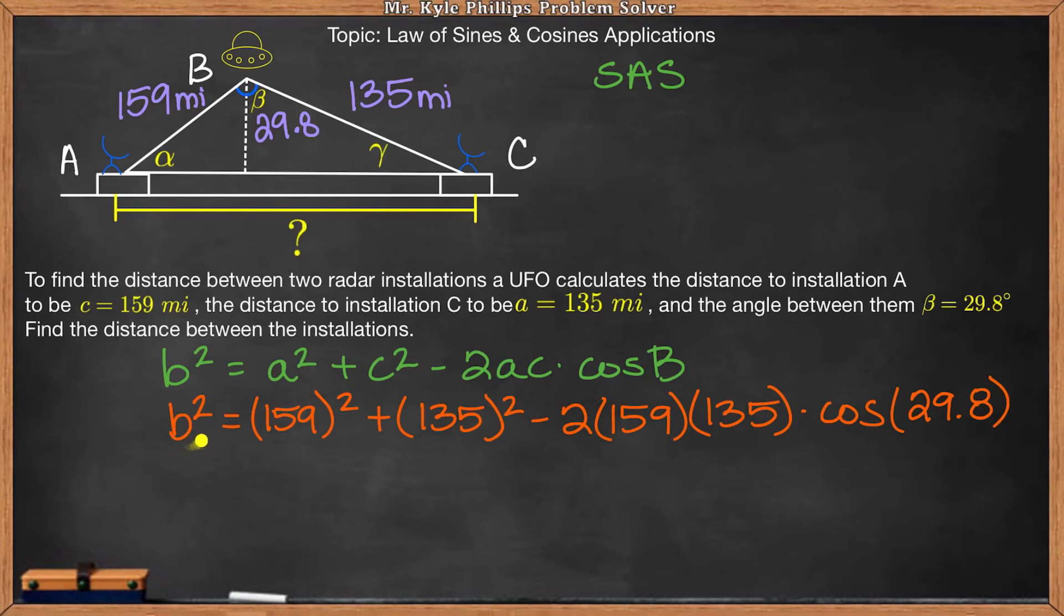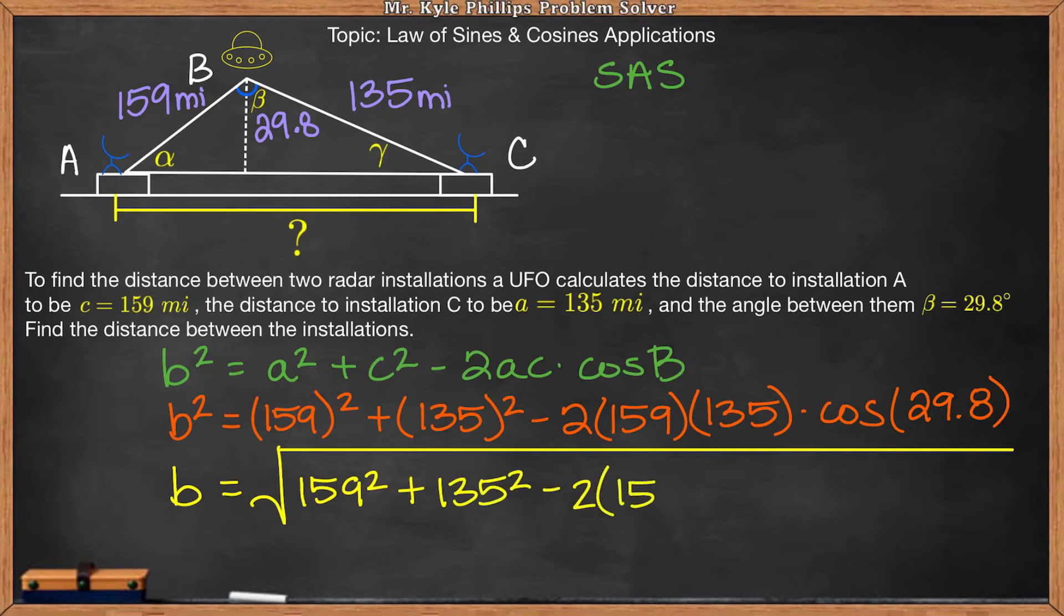Here, we don't want the leg of B squared. We want the value of just leg B. So to get B by itself here, we are going to take the square root. So B is going to be the square root of all of this. So it's the square root of 159 squared plus 135 squared minus 2 times 159 times 135 times the cosine of 29.8.